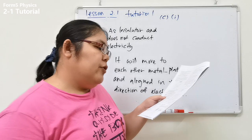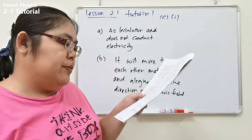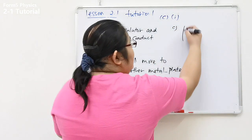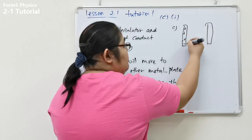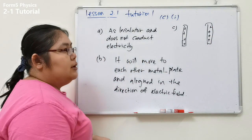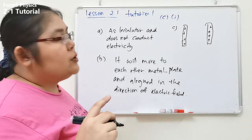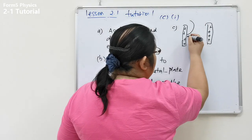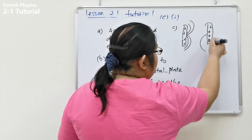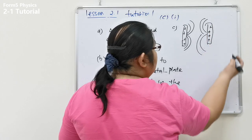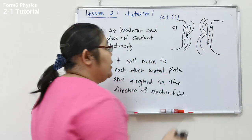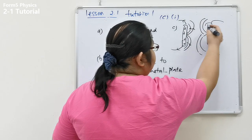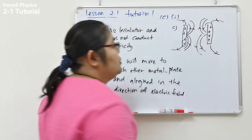Part C asks you to draw the electric field lines between two electrodes. In the first diagram, both plates are positive, so they repel each other. The center is empty — no field lines cross. All lines must point outward from each plate, and the arrows draw out from the plates. You can see there is a gap in the center because same charges repel.